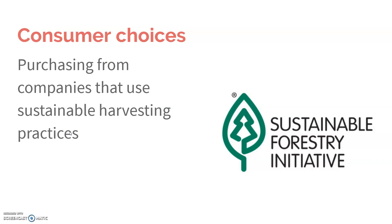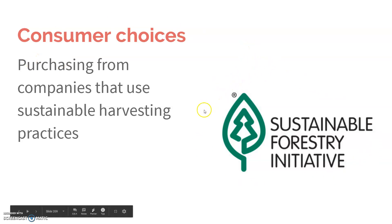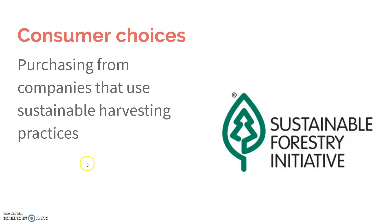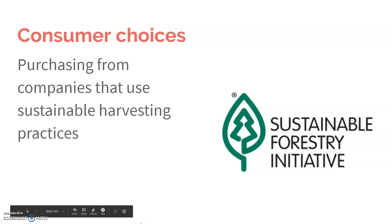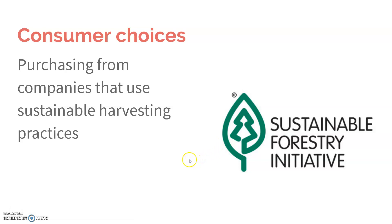When shopping for lumber or paper products, it's important to look for the sustainable forestry certification label, because that shows the company sourced their wood using sustainable harvesting practices — they didn't mow down entire areas of trees, and if they did, they had to reforest those areas. They were more selective in the areas that they chopped wood from.